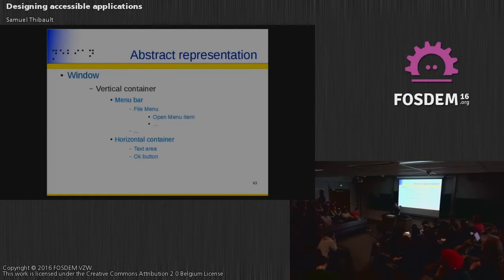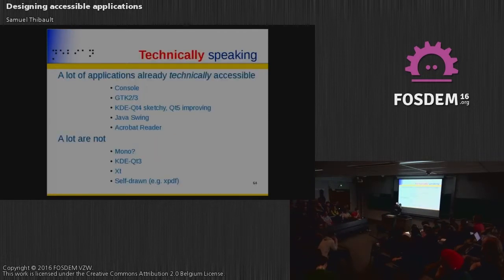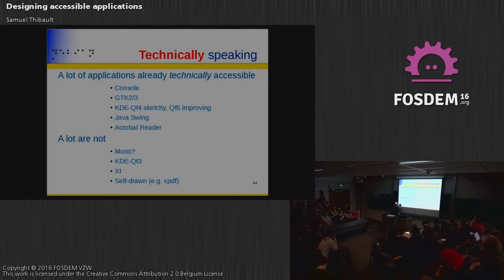For graphical applications, it works really well with GTK 2 and 3. Qt 4 was not so good and they mostly left it as is; Qt 5 is being worked on and is really improving. We have Java also working. Adobe Acrobat did implement some accessibility in the reader, so it did work — at least the last time I tested it. A lot of other applications are not accessible, notably old Qt applications, the venerable Xt applications.